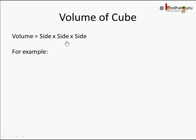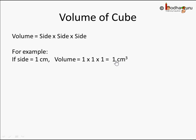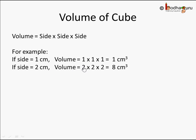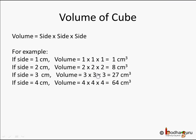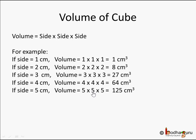Let's take some more examples. A cube with each side as 1 centimeter has volume 1 × 1 × 1 = 1 cm³. If a cube has side 2 cm, its volume is 2 × 2 × 2 = 8 cm³. For side 5 cm, it's 5 × 5 × 5: 5×5 = 25, and 25×5 = 125, so 125 cm³.